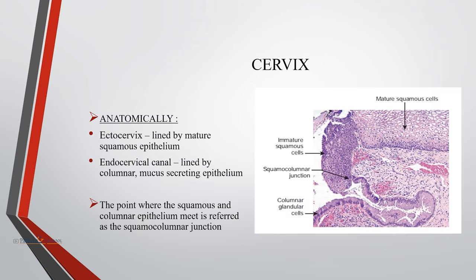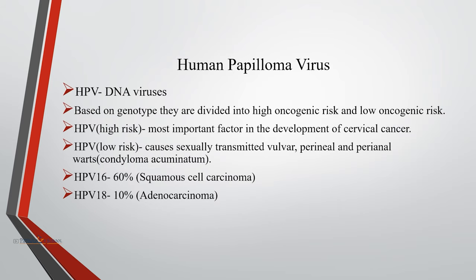Anatomically, cervix is divided into ecto cervix and endocervical canal. Ecto cervix is lined by mature squamous epithelium, and endocervical canal is lined by mucus-secreting columnar epithelium. The point where squamous and columnar epithelium meet is referred to as the squamo-columnar junction. This unique epithelial environment of the cervix renders it highly susceptible to infection with human papillomavirus.